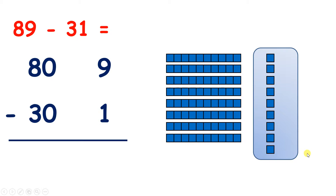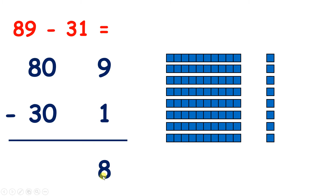Starting with the units, we have 9 and we want to take away 1. If I take away 1 unit, that leaves me with 8 units — 9 take away 1 is 8. And again, even though I'm subtracting, we're going to add our leftover units and our leftover tens to find our answer, so we can write an addition symbol here.